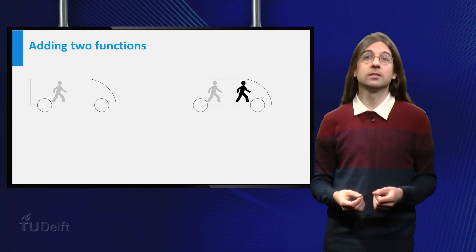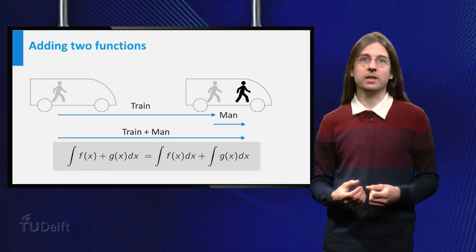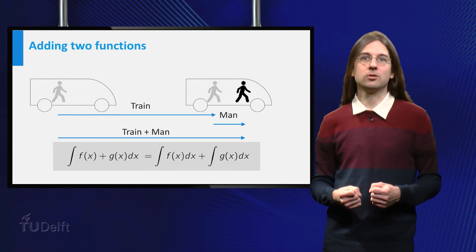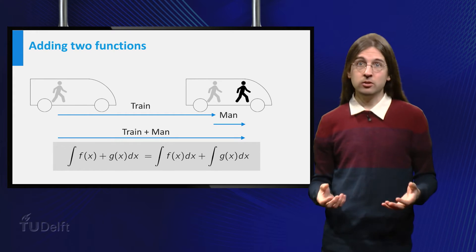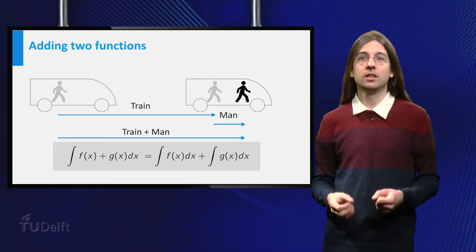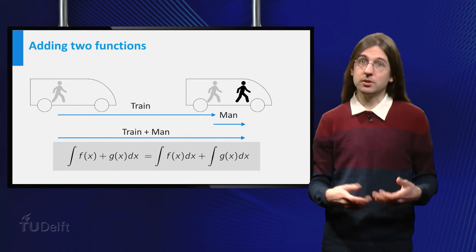That is, if f represents the speed of the train and g represents your walking speed, the integral of f plus g equals the integral of f plus the integral of g.